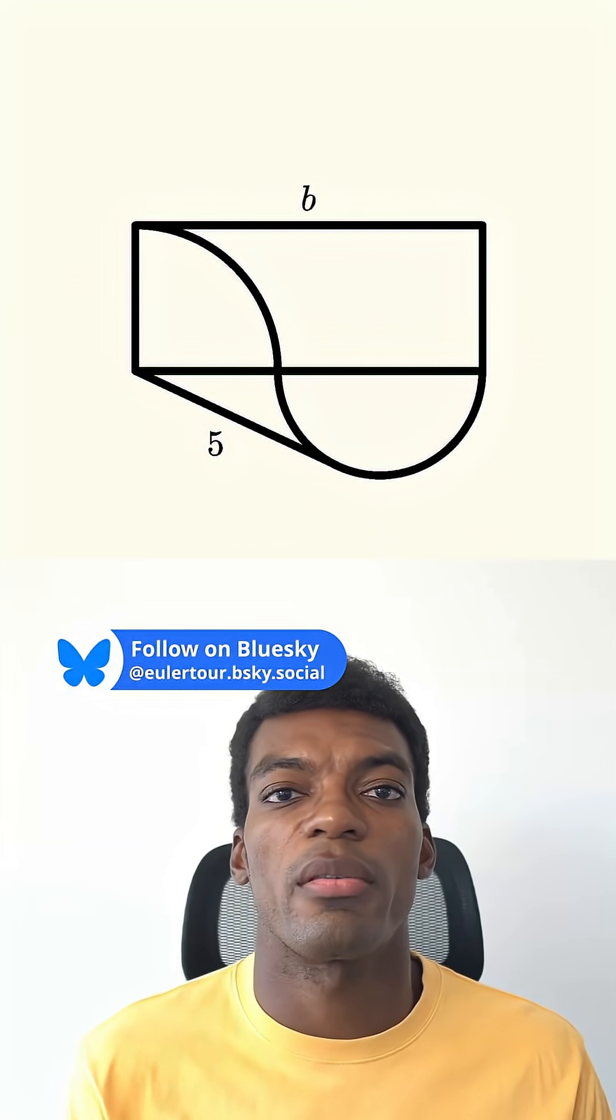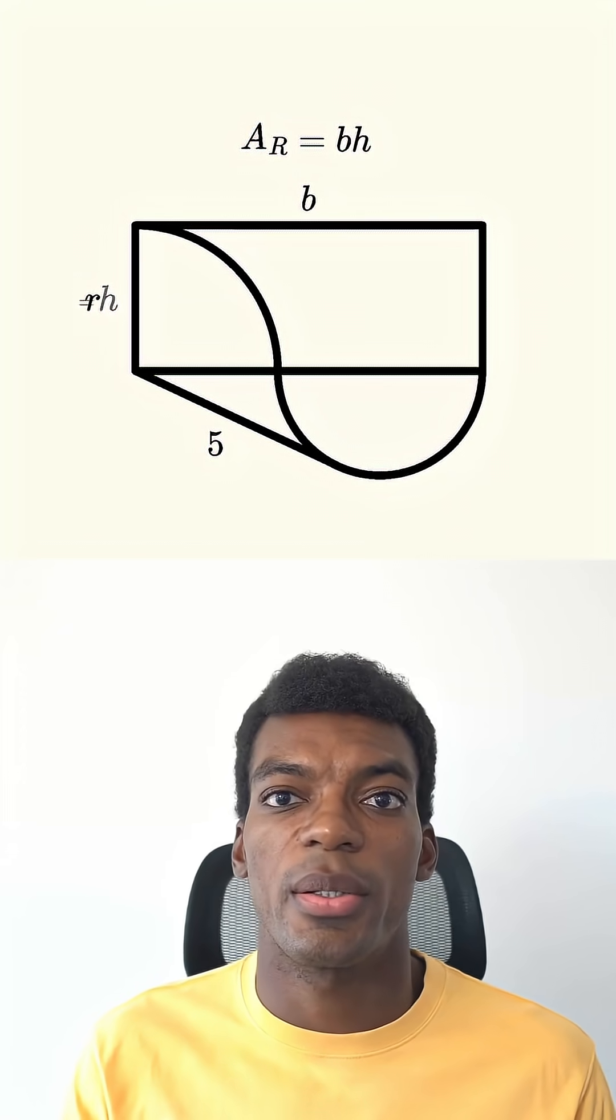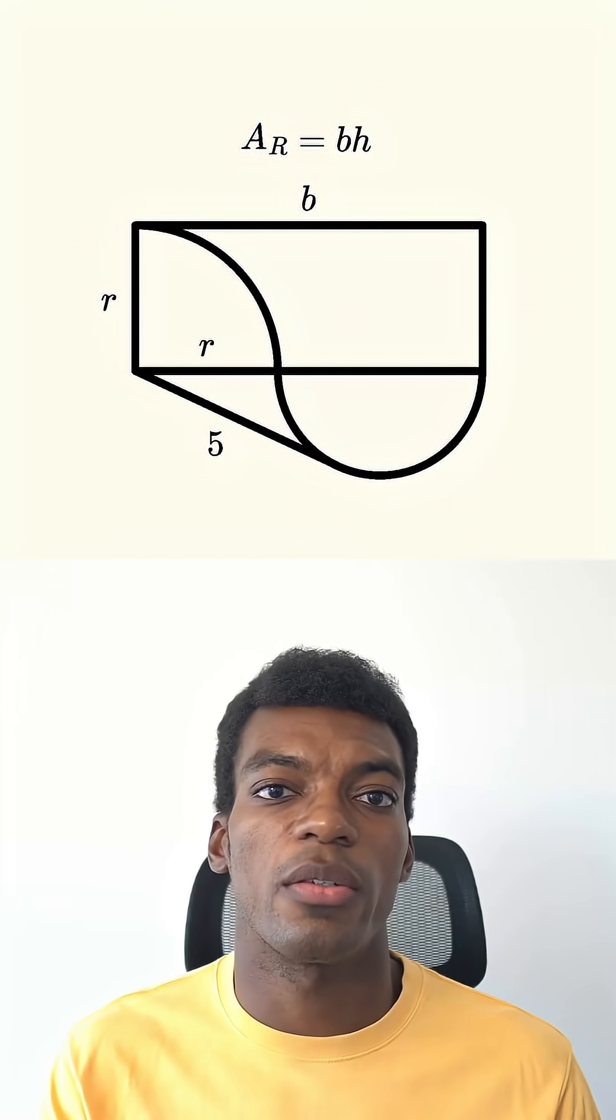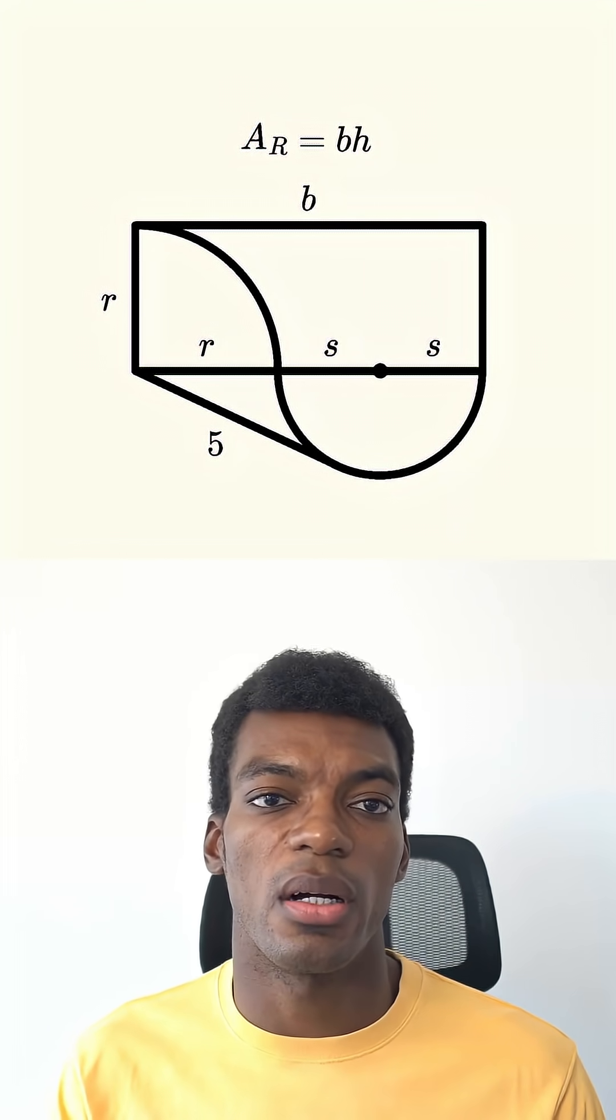Alright, time's up. We know the area of the rectangle is equal to the base times the height. The height of the rectangle is also equal to r, the radius of the quarter circle, and this is also a radius of the quarter circle. Now if we call the radius of the semicircle s, then we can see the base is equal to r plus 2s.